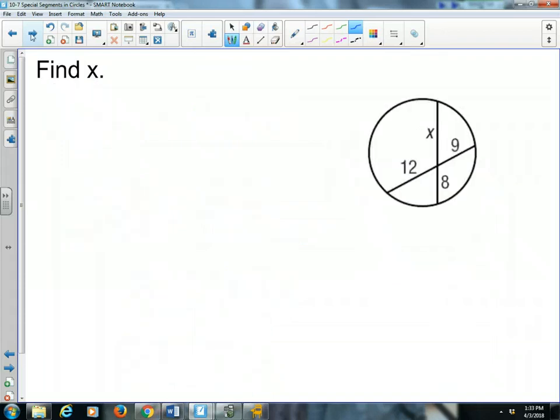There we have our first one. Our second one, we have two chords that intersect in a circle. When two chords intersect in a circle, that's where we have their cross-products equal each other. So this chord, the product, is 12 times 9. This other chord, its product, is x times 8.